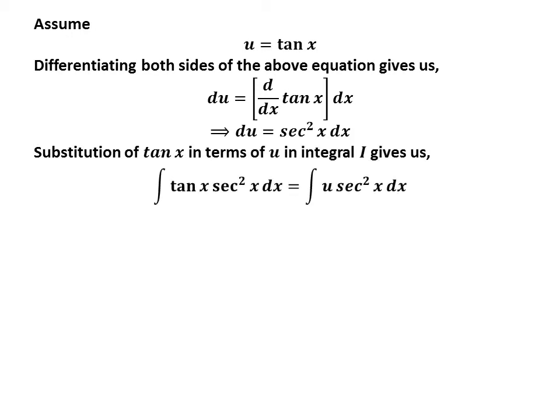Let us substitute tangent of x by u, as we assumed u is equal to tangent of x. So, integral of tangent of x times square of secant of x is equal to integral of u times square of secant of x.